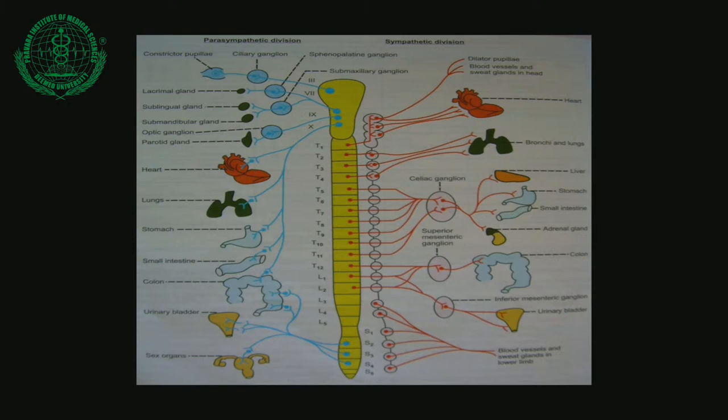The two sympathetic trunks converge and fuse upon the anterior surface of the coccyx, forming a terminal swelling known as the Coccygeal Ganglia. This unpaired coccygeal ganglia is also called the Ganglion Impar. It receives pre-ganglionic fibers from L1 and L2 segments, and the post-ganglionic fibers are distributed to the abdominal viscera and pelvic region.